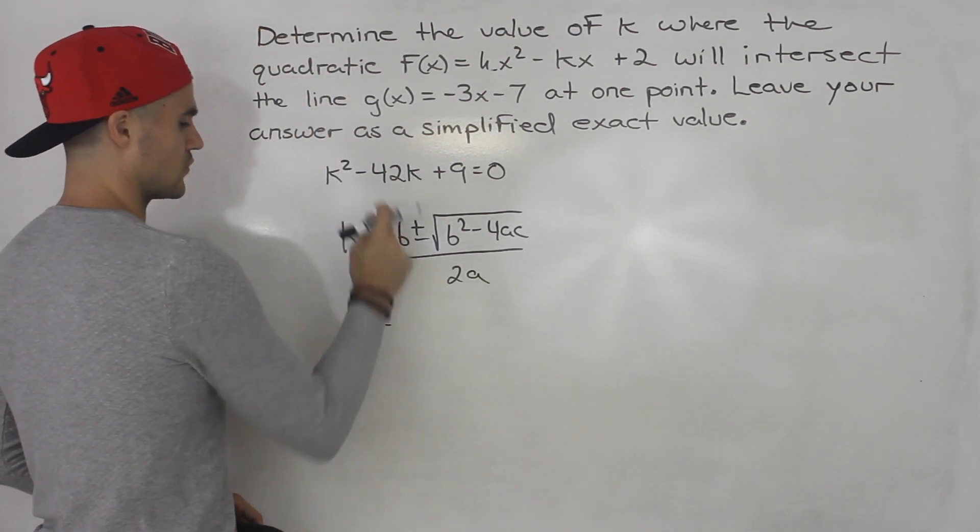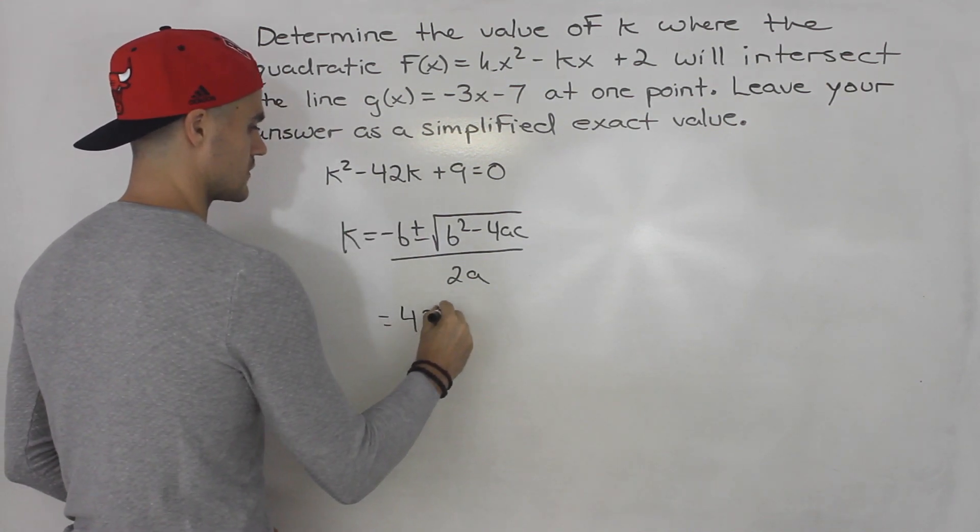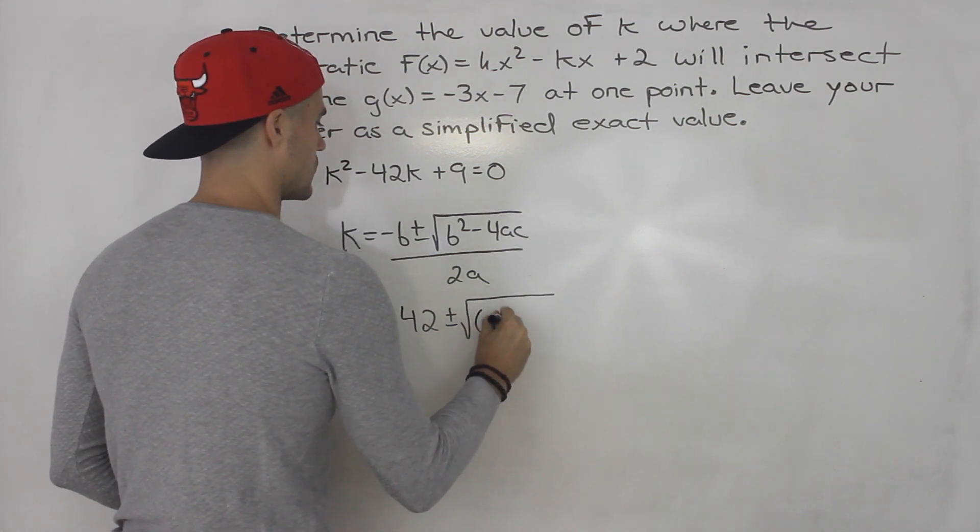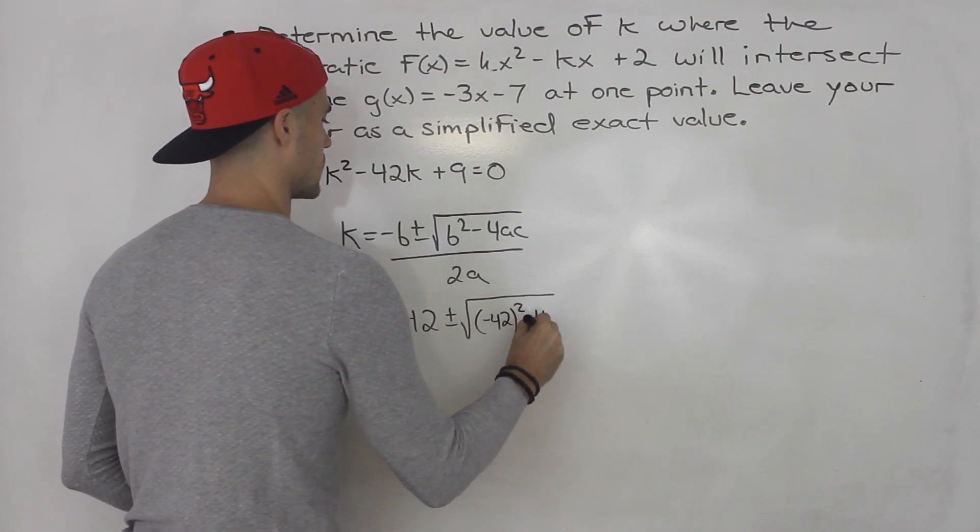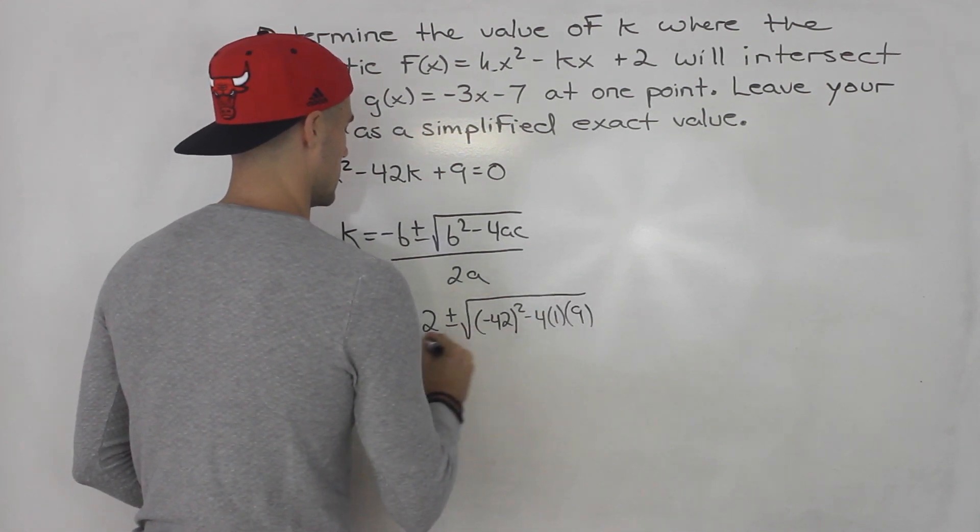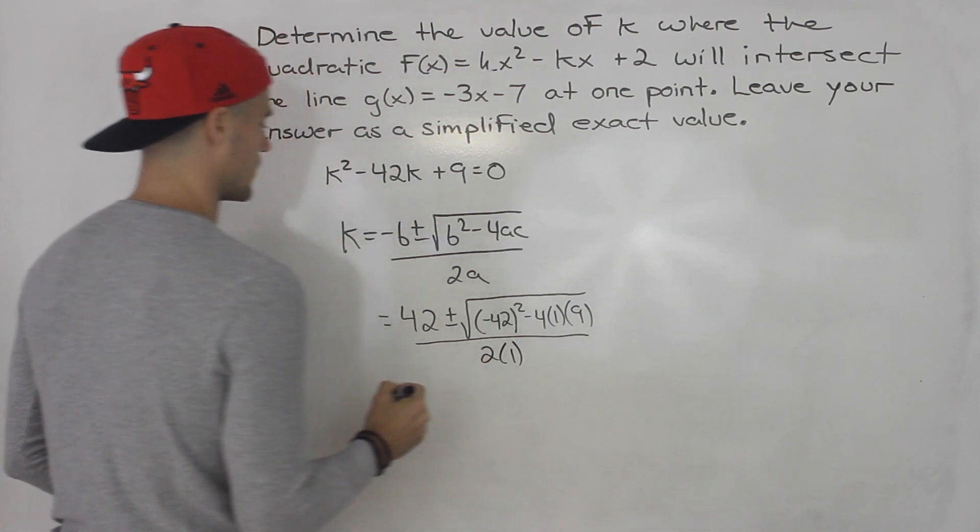So negative b, negative 42. So negative negative 42, that turns into positive 42. And we'll have plus or minus negative 42 squared minus 4 times the a value of 1 times the c value of 9, all over 2 times 1.